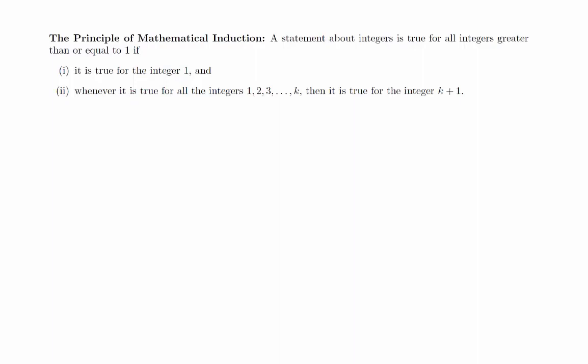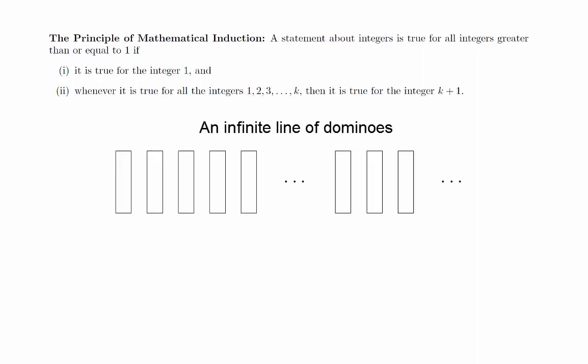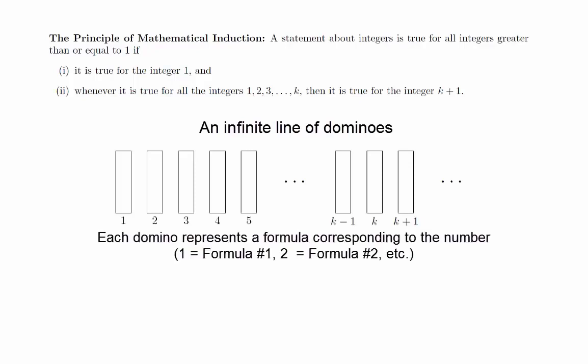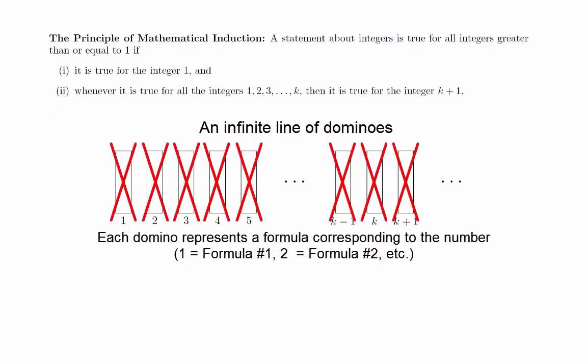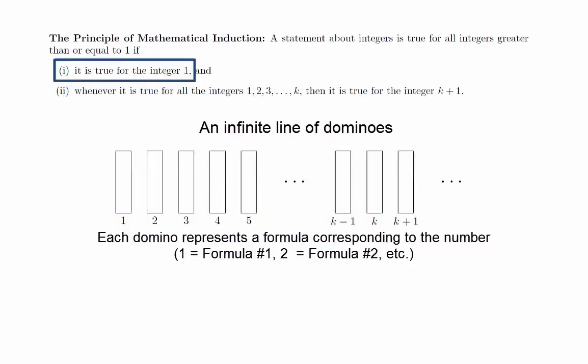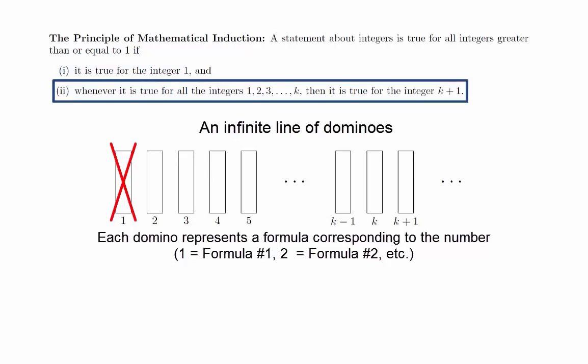For this class, we're not going to get bogged down in the details of the differences between the various forms of induction. To understand how this works, we will think about an infinite line of dominoes. We will label all the dominoes with positive integers, each one representing a formula we wanted to prove to be true. We will also imagine that knocking over a domino is like proving the statement to be true. The first condition of mathematical induction is the claim that we're able to knock the first domino over. The second condition is the claim that for any k, we can knock over the k plus first domino if we can knock over the first k dominoes.